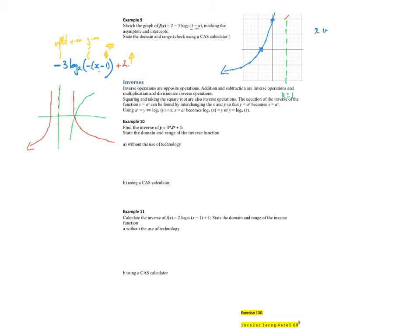So, x-intercept, we'll put y equal to 0. So I get 0 is equal to negative 3 log base 2 of 1 minus x plus 2. So if I take negative 2 across, divide by negative 3. So I'm going to get 2 over 3 is equal to log base 2 of 1 minus x. To get rid of the log expression, 2 to the power of 2 thirds is equal to 1 minus x. So x will be equal to 1 minus 2 to the power of 2 thirds.